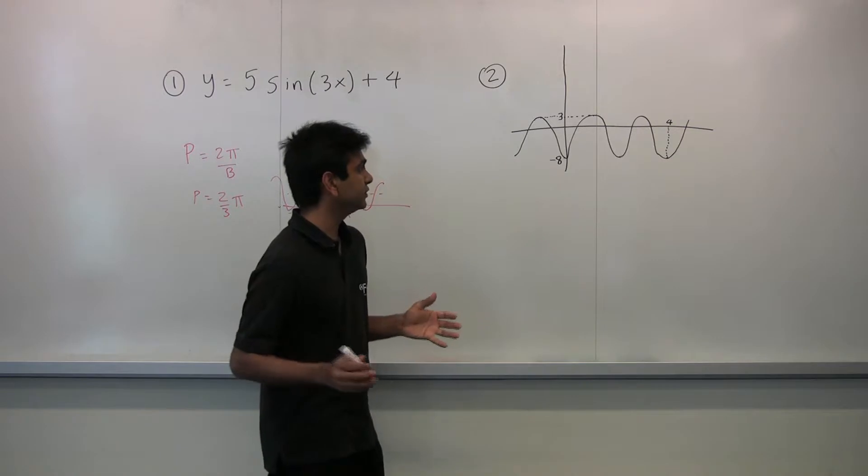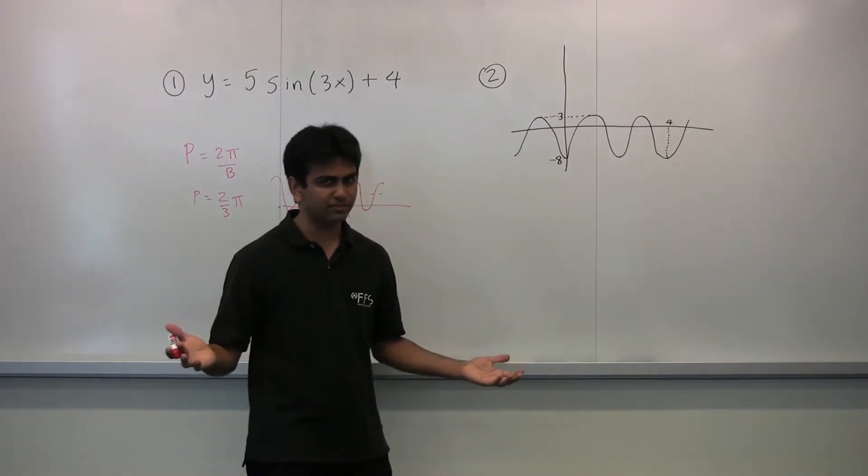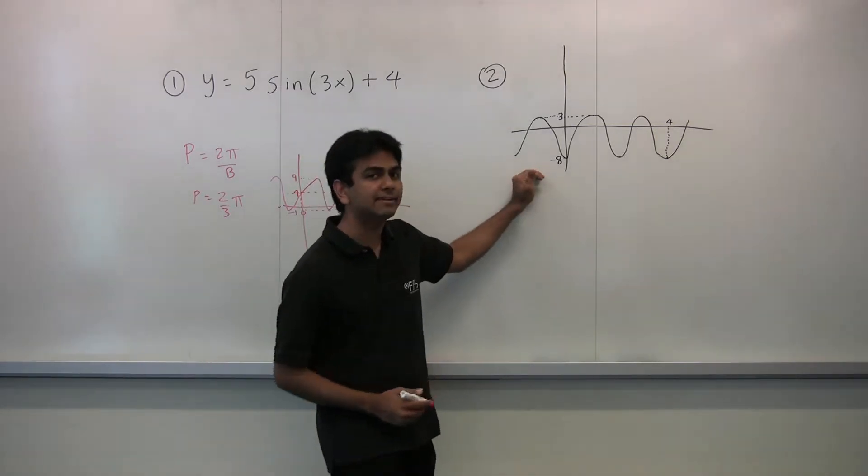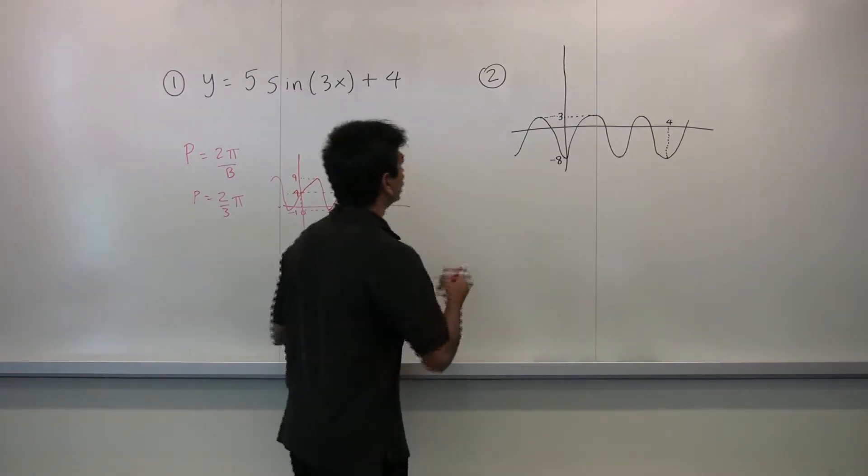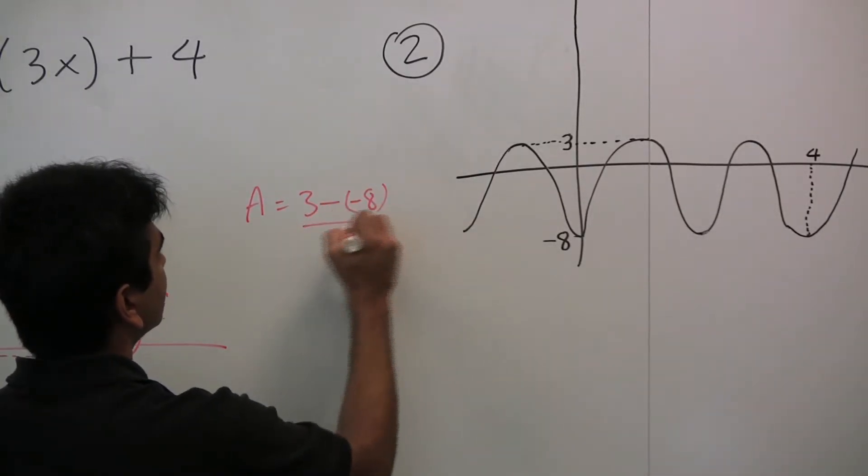Our amplitude a is the max minus the min divided by 2, from the previous video again. 3 minus negative 8 divided by 2.